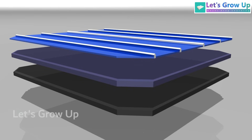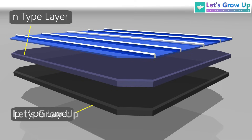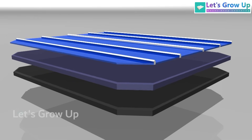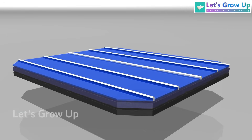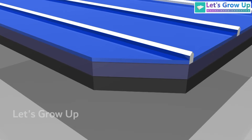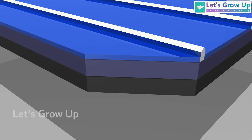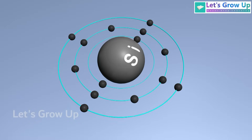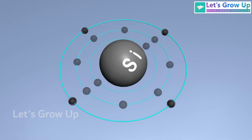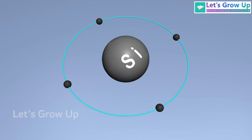Solar cells operate based on the movement of electrons and holes within the material. This is why solar cells use two types of layers. The bottom layer is the p-type layer, while the top layer is the n-type layer. When these two layers merge, they form a p-n junction. To understand the p-type and n-type layers, let's start by getting familiar with the structure of silicon — each silicon atom has four valence electrons in its outer shell.